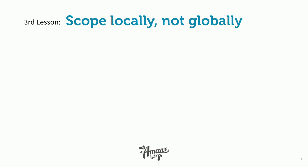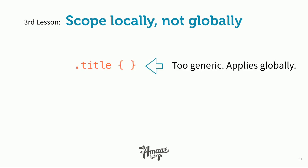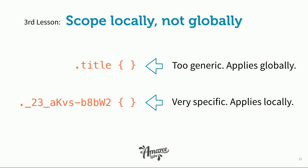The third lesson: scoping locally, not globally. When we look back at that 'title' class — it's a content semantic class name used in many different places, and CSS class names are always global. There currently isn't a way to make CSS local in production browsers. So we're going to create a very specific class name that essentially only applies locally — it only gets applied to that chunk of HTML you created. Even though technically it's still a global CSS class name, you'll never get the same class name repeated across all other components on the page.